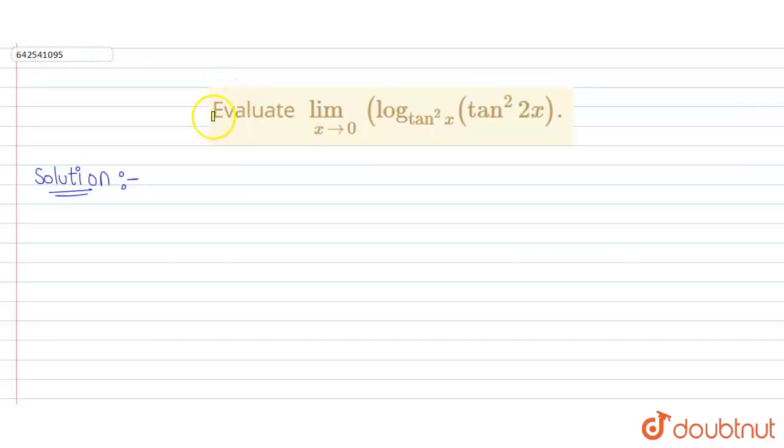Hello guys, so our question is we have to evaluate limit x tends to 0 of log base tan square x of tan square 2x.